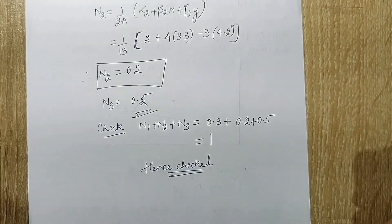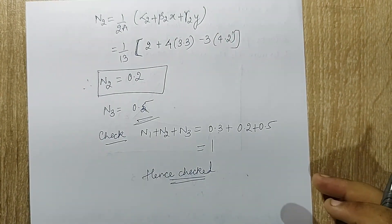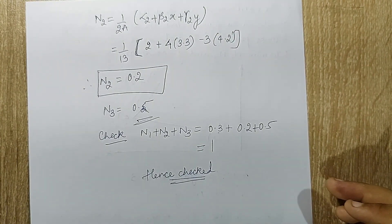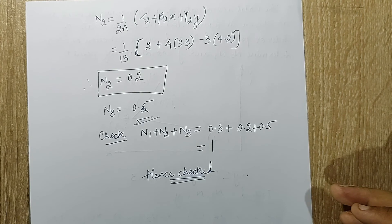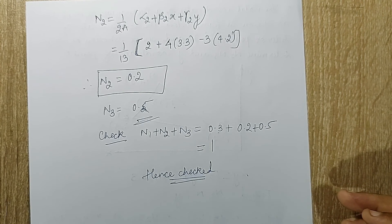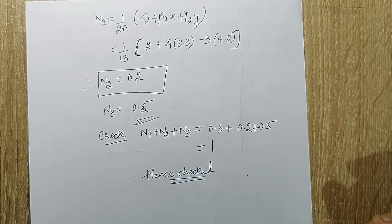This is how numericals on constant strain triangle are supposed to be solved — you calculate the interpolation functions, which are the shape functions. With this I end the session. If you have any doubts, please write to me in the comment section. See you in the next session. Thank you.